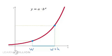We plug w in for x, and we find that the y coordinate would be a times b to the w.